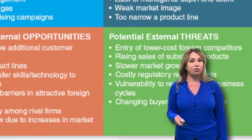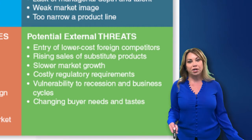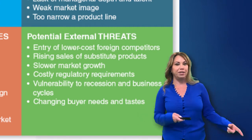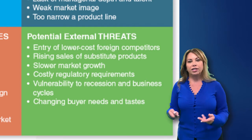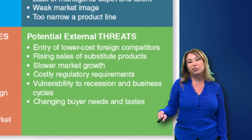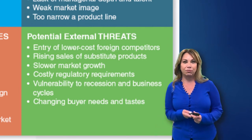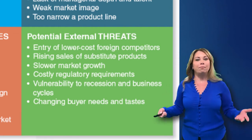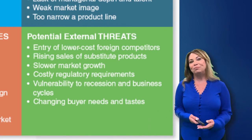Lastly, we can talk about potential threats that we're facing. This could be anything from lower cost foreign competitors — in the fashion industry, U.S. fashion firms have a difficult time competing with Chinese products because the cost of labor is so much less. Also, we could have substitutes that are growing in the market, or maybe our growth is just slowing. Increasing regulatory requirements can really be a threat for businesses, as well as economic conditions in general — maybe we're in a recession. We also always have to be aware of changing buyer needs and tastes.